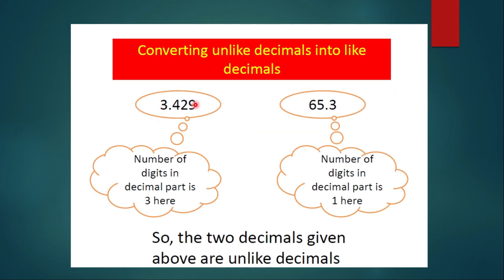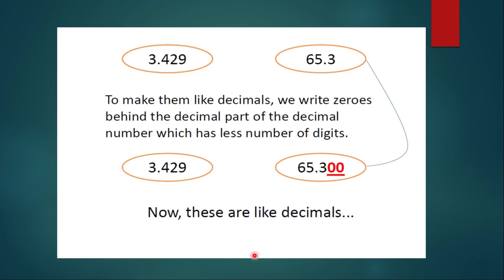Now let us see how to convert unlike decimals into like decimals. Take the number 3.429 — the number of digits in the decimal part is 3. And 65.3 — the number of digits in the decimal part is 1. So these two decimals are unlike decimals. To make them like decimals, we write zeros behind the decimal part of the number which has fewer digits. Here we have three digits and there only one digit.